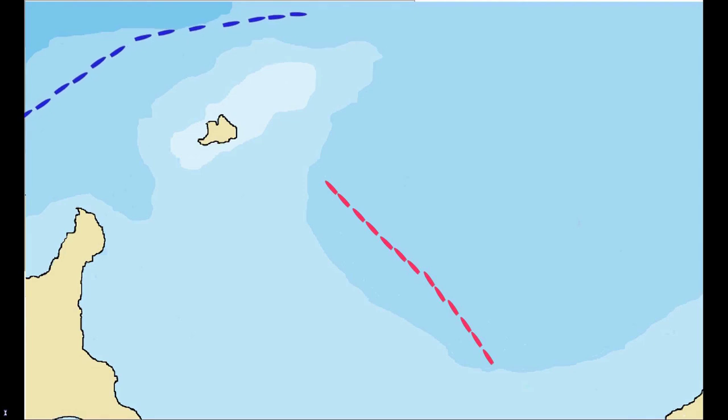His flagship, the Vanguard, was at 6th place, while his line was led by Captain Foley on Goliath.